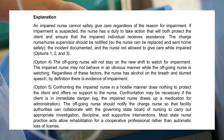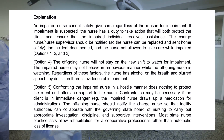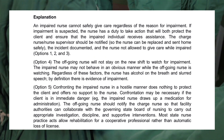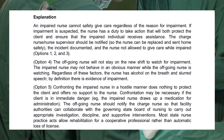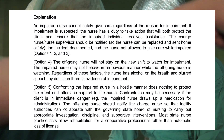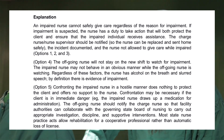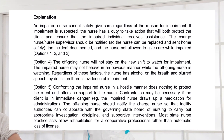Option 4 is incorrect. The off-going nurse will not stay on the new shift to watch for impairment, and the impaired nurse may not behave in an obvious manner while being observed. Regardless, the nurse has alcohol on the breath and slurred speech — by definition, there is evidence of impairment. Option 5 is also incorrect. Confronting the impaired nurse in a hostile manner does nothing to protect the client and offers no support to the nurse. Confrontation may be necessary only if the client is in immediate danger. Most state nurse practice acts allow rehabilitation for a cooperative professional rather than automatic loss of license.